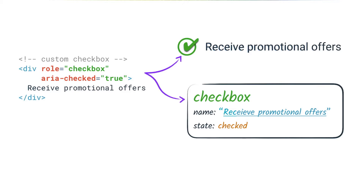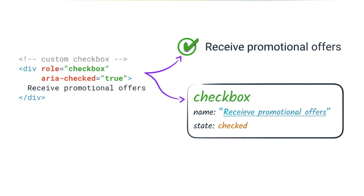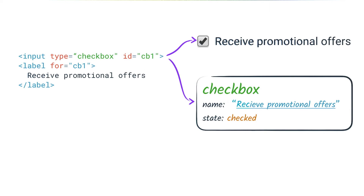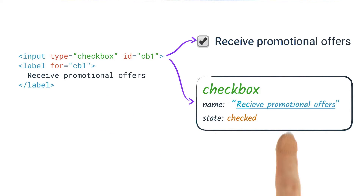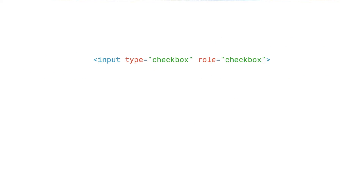We just took an initial look at how we can use ARIA roles and properties to specify the semantics for a particular element. However, we should remember that native HTML elements have implicit semantics. For example, input type equals checkbox implicitly has a role of checkbox.